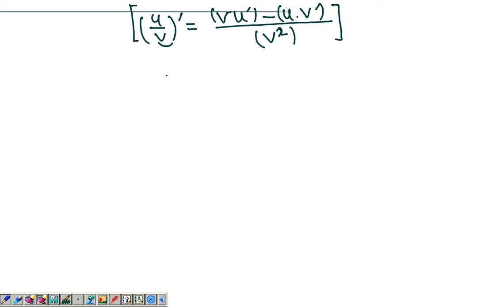Let me just take an example. And yes, the alternative would be that you take u times v to the negative 1 and then apply the product rule for this function. I'll show you both methods. Let me take an example: x over e to the x.